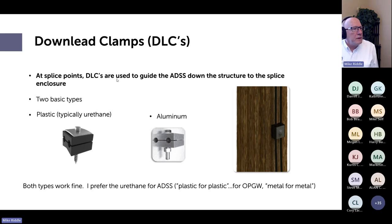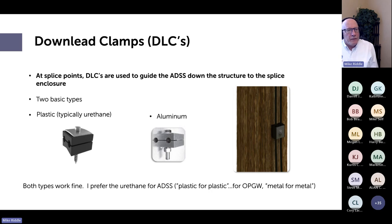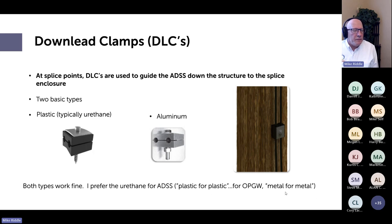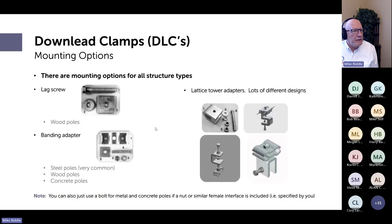Next: down lead clamps. At splice points, you need to guide the cable down the structure to the splice enclosure. There are two basic types: plastic (typically urethane) and aluminum. Both are fine. I tend to recommend urethane for ADSS and metal for OPGW — plastic to plastic, metal to metal. For mounting: lag screw, banding adapter, or lattice tower adapters are all available.